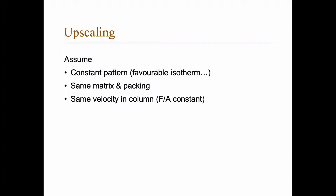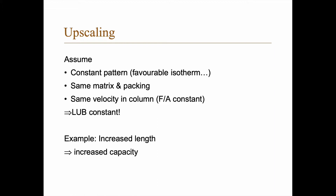You also need, for this trick to work, to have the same velocity in the column, meaning that the flow divided by the cross-sectional area must be constant. What happens when this is true is that the length of unused bed stays constant. So, for example, if we increase the length — we have a small column that is also short, and then a large column that is also long — you increase the capacity, because the larger the volume you have, the more adsorbent you can put in there. But you also increase the degree of utilization, since the length of unused bed is constant.